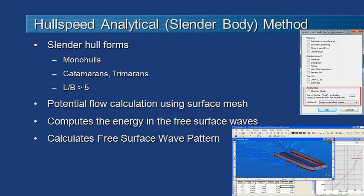The analytical method, our second approach or slender body method, is useful for slender hull forms. It can be used for either monohulls or multihulls, but it does require that you have a fairly large length to beam ratio - at least five is a good guide. That is somewhat speed dependent as well. If you want to go to higher speeds you probably should go for a higher length to beam ratio.